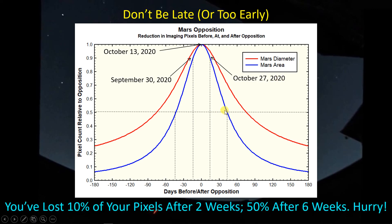Now if you wait until December — roughly six weeks away — then you would have lost 50% of your pixels. 7,000 of my imaging pixels, by the time December rolls around, will have empty space in them instead of Mars if you wait that long. So things are changing fairly rapidly here, which means if you're interested in getting out there and getting a picture of Mars, this is the time to do it where you can maximize the resolution of your camera.